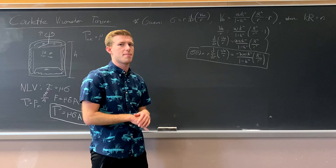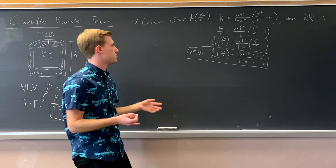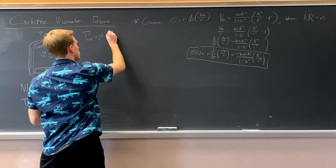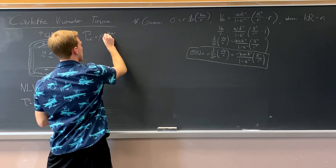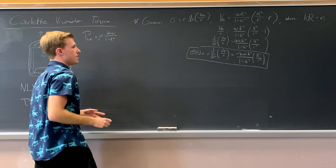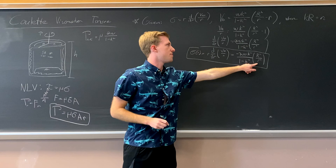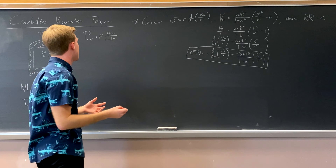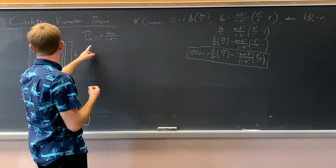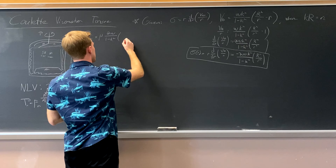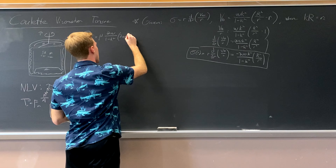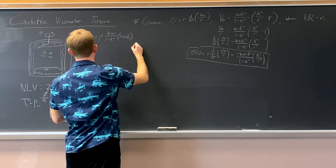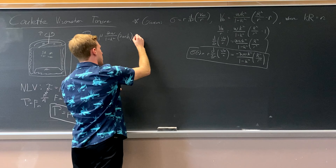So the shear rate at r_i simplifies to 2 omega over (1 minus k squared), with the k's canceled. Multiplying by the area of the small cylinder, which is 2 pi r_i H (circumference times height), and then by the radius r_i, gives us the torque at the inner cylinder.